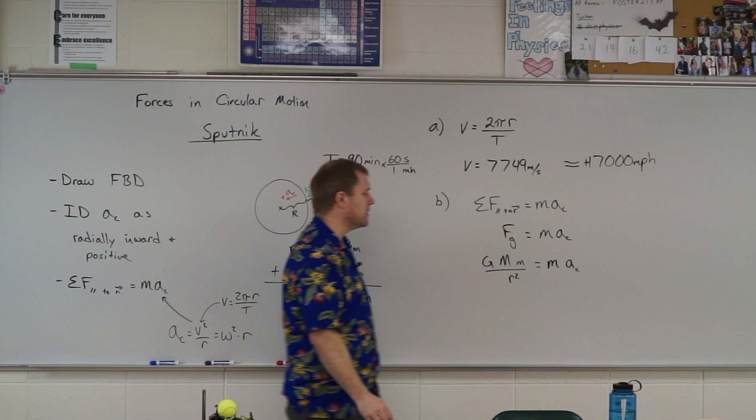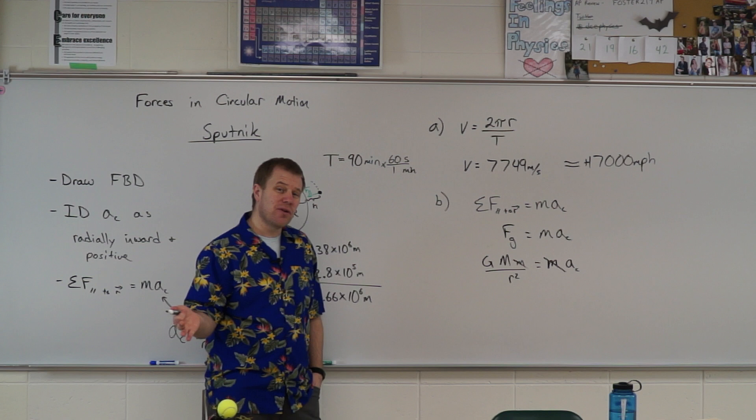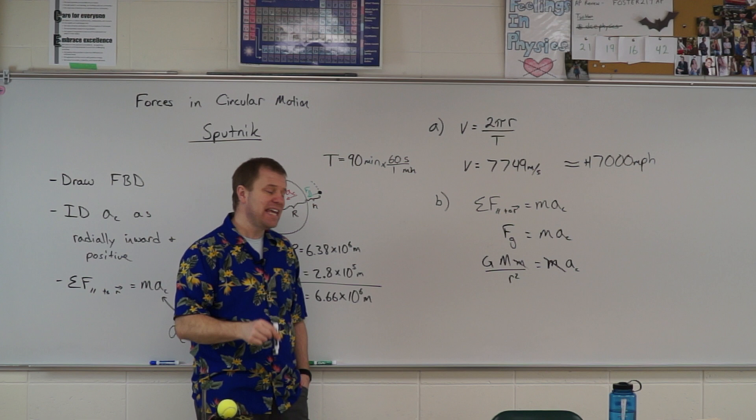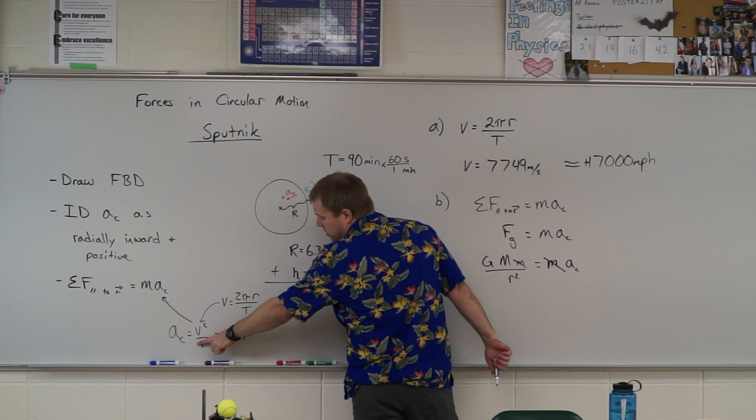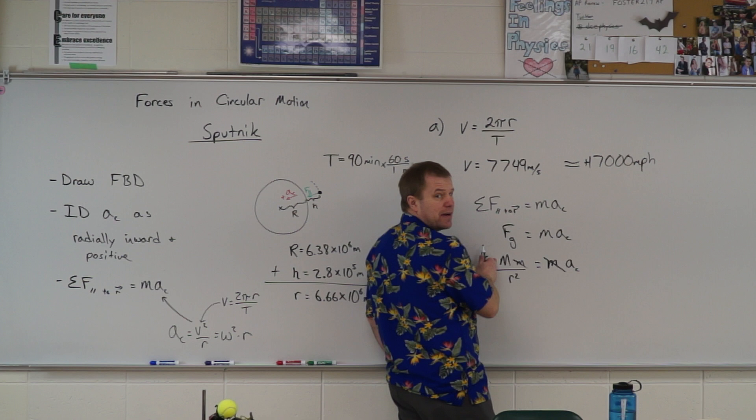And you'll see that the mass of Sputnik cancels out, meaning we don't need to know the mass of the object orbiting in order to find the mass of the object being orbited. Now AC, we will make a substitution here. We're going to put in that substitution of V squared over R. We already found V in part A.